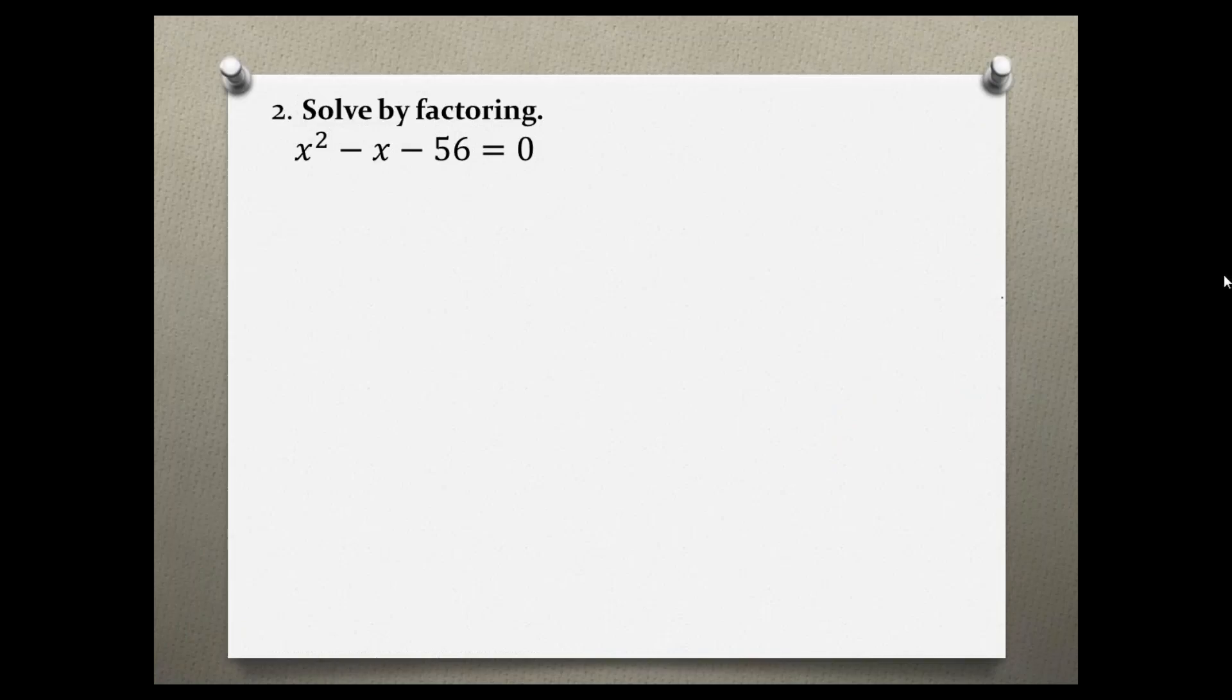So again to find the x value or values we have to factor, and this is a trinomial with a coefficient of 1, so we use what I call the Columbia method.